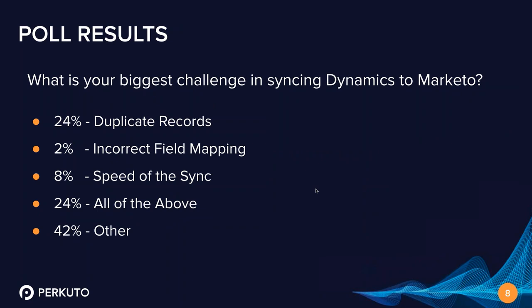All right. So first, I'm happy to be here today. I wanted to start by going over the poll results from the poll that you were asked when you registered for this webinar. We asked what your biggest challenge in syncing Dynamics to Marketo is: 24% said duplicate records, 2% said incorrect field mapping, 8% speed of sync, 24% all of the above, and 42% said other. For anyone that said other, would you mind submitting in the chat what other issues and challenges you're having?